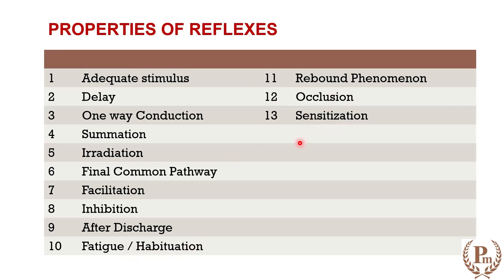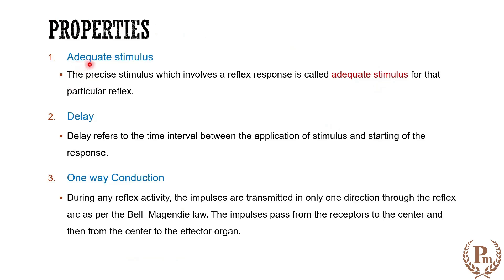The first property is adequate stimulus. The precise stimulus which elicits a reflex response is called the adequate stimulus for that particular reflex. For example, for the muscle spindle, touch is not an adequate stimulus and pressure is not an adequate stimulus. The adequate stimulus for the muscle spindle is stretching of the muscle. For any reflex to happen, there has to be an adequate stimulus for the reflex arc to be active.